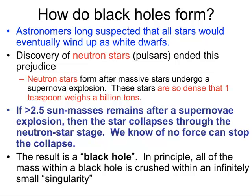We think that if something more massive than about two and a half times the mass of the Sun is left over after a supernova explosion, that thing will eventually collapse into a black hole. These singularities can be thought of as infinitely dense — all this mass crushed within something infinitely small, creating such a strong gravitational field that light cannot escape.